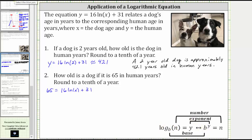So we first subtract 31 on both sides. 65 minus 31 is equal to 34, giving us 34 is equal to 16 times natural log x.